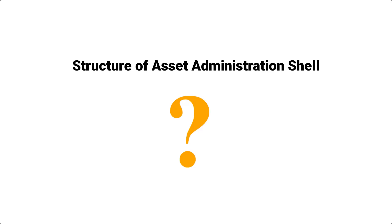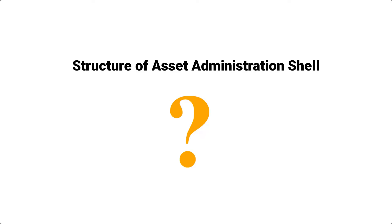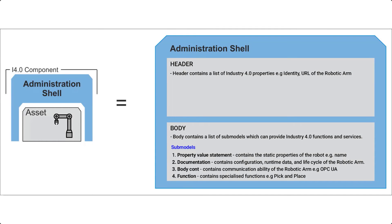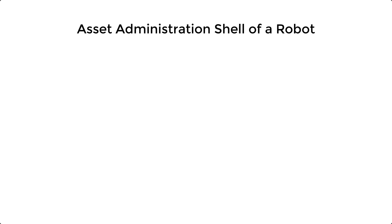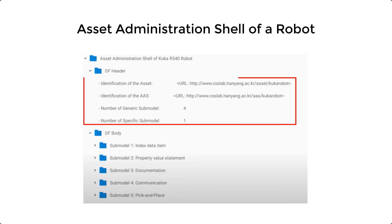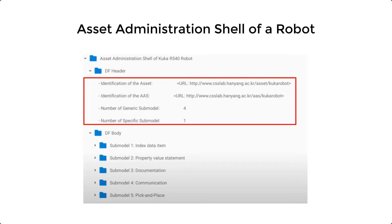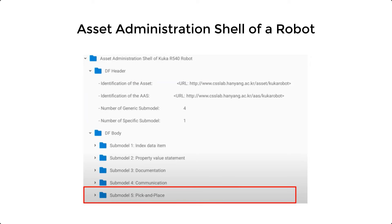What exactly does an administration shell look like? The asset administration shell is a data structure that consists of a header and a body, whereby the header contains a list of properties about the shell and its asset — that is, self-description — and the body contains a list of sub-models that can provide Industry 4.0 functions and services. For example, looking at the structure of an administration shell for a robot, the header contains a list of properties for the robot, and its pick-and-place functionality appears as a sub-model in the body of its administration shell.